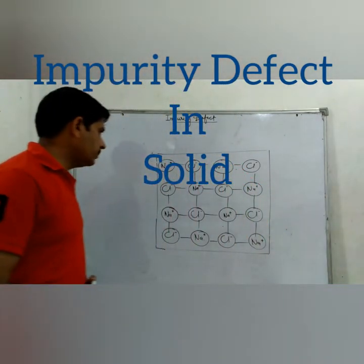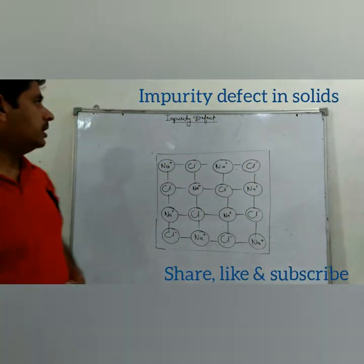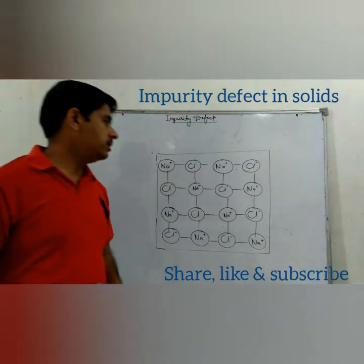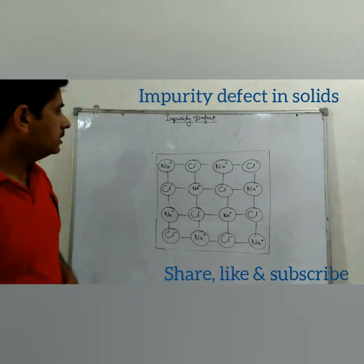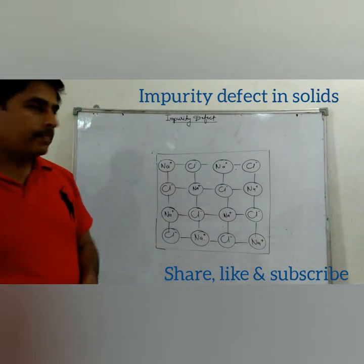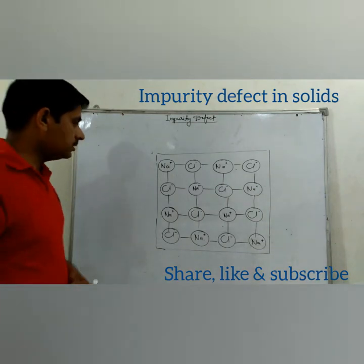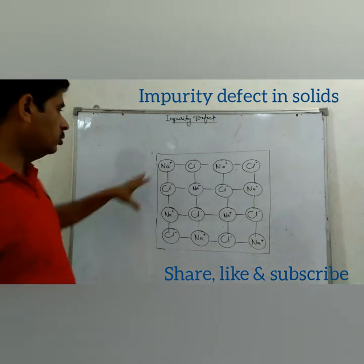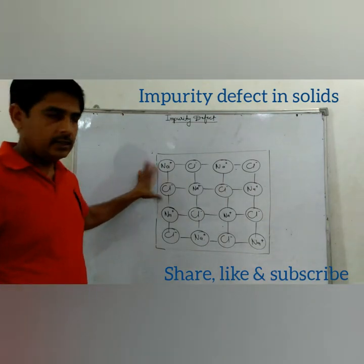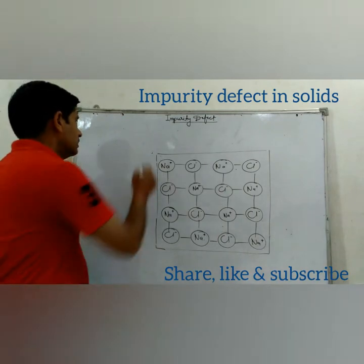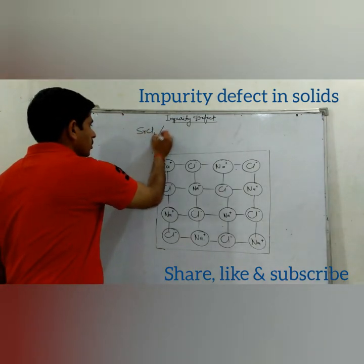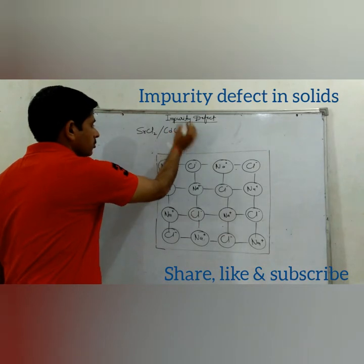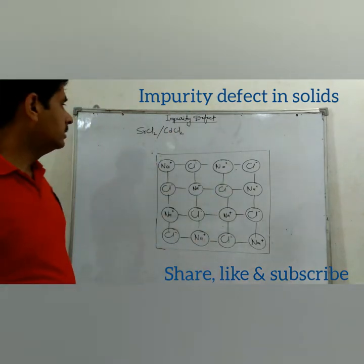In this topic, we will study how impurity defect is created. When we take molten form of sodium chloride and we add some impurity of strontium chloride or cadmium chloride into it, let's see what happens.